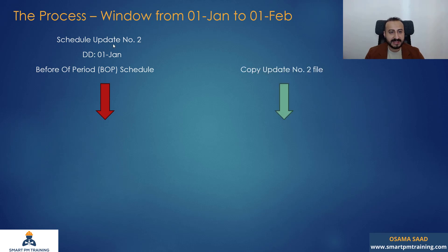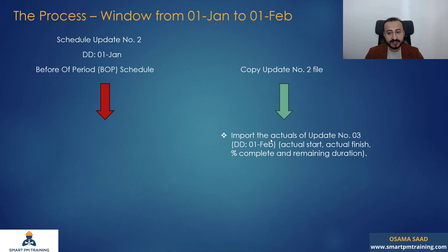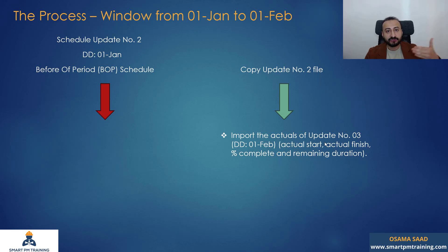We will copy schedule update number two file — I'm going to take a copy of the before-of-period schedule. Then I will import the actuals of schedule update number three: data date 1st of February. I will import the actual start, actual finish, percentage complete, and the remaining duration. So I'm going to go to schedule update number three, export the actuals, and import them into this file which is a copy of update number two.